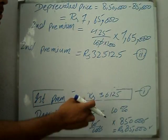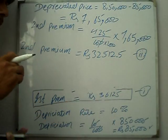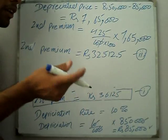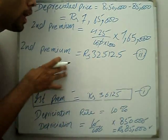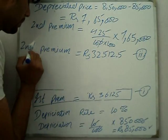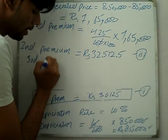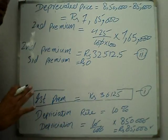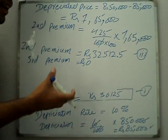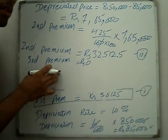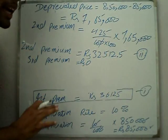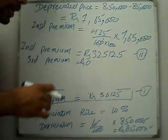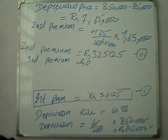Now for the third premium — the last condition given is that no claim was made. The third premium, as per the condition given at the end of the problem, is Rs. 0. Remember: what is the third premium? Rs. 0. No last condition means the third premium is not applicable — it is Rs. 0.